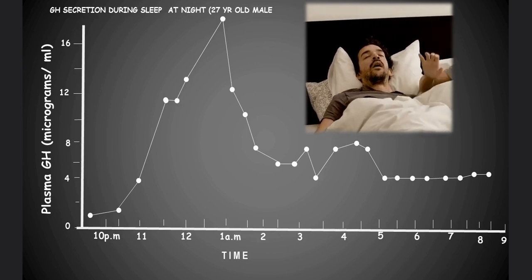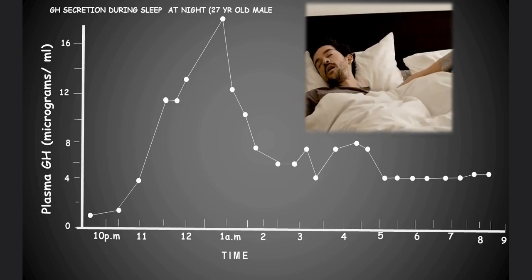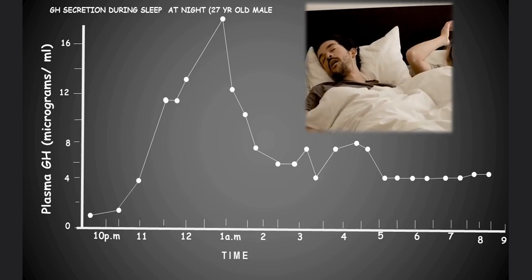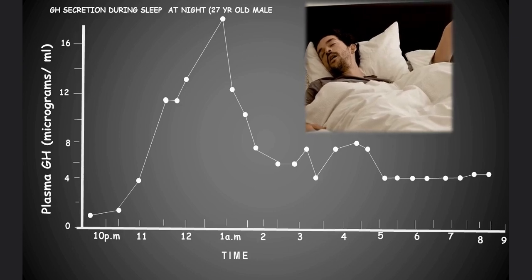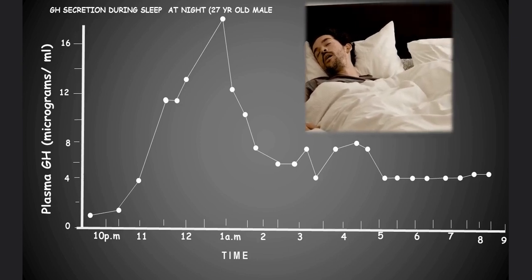During subsequent deep sleep phases, peak growth hormone secretion was delayed if the onset of sleep was delayed. Subjects who were awakened for 2 to 3 hours and allowed to return to sleep exhibited another peak of GH secretion.